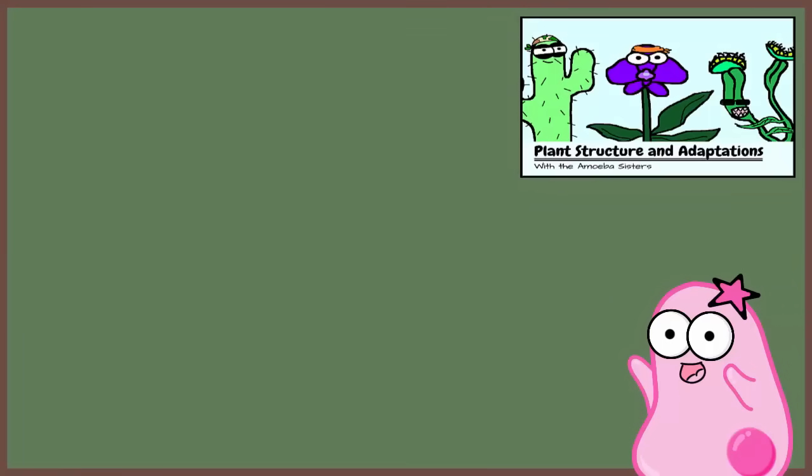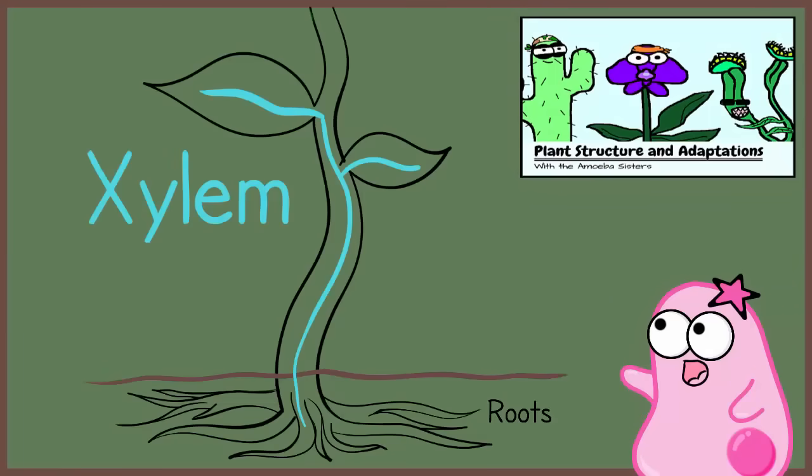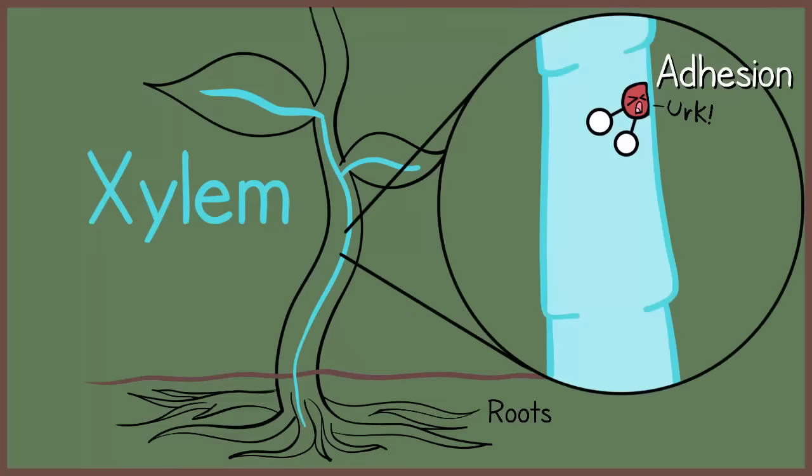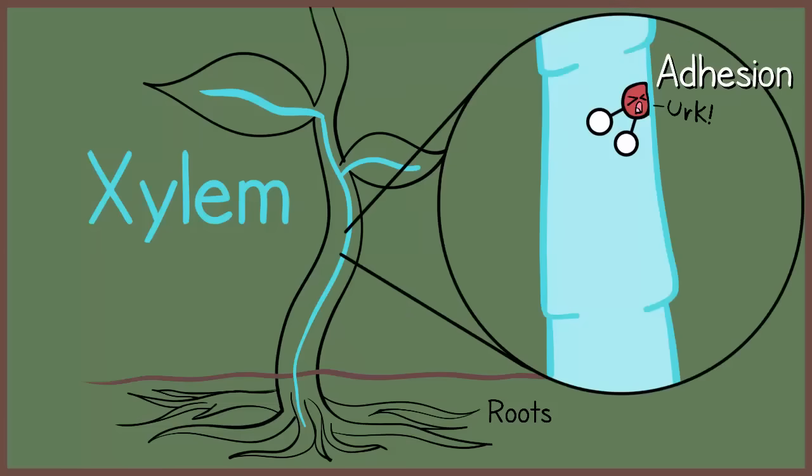Well, in our plant video, we talk about the xylem. It's vessels within certain types of plants, like trees, and these vessels transport water. But what's really neat about water is that it sticks to the xylem walls in what is known as adhesion. And this helps fight gravity.